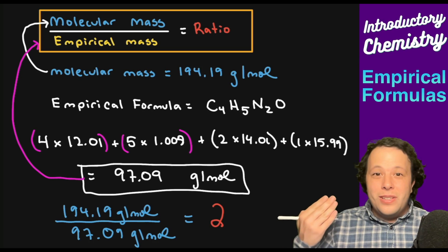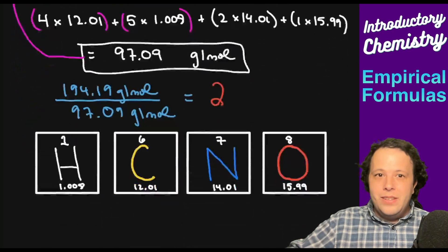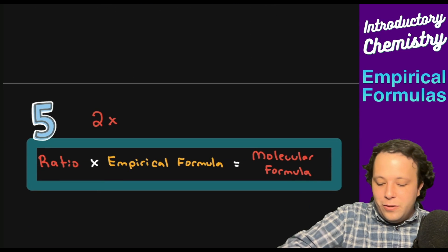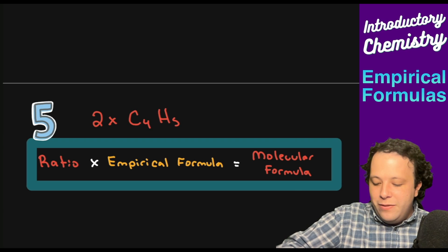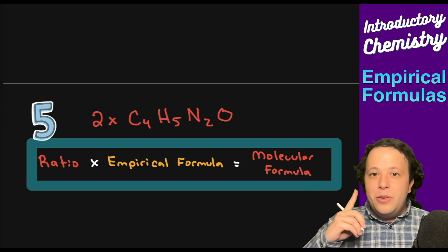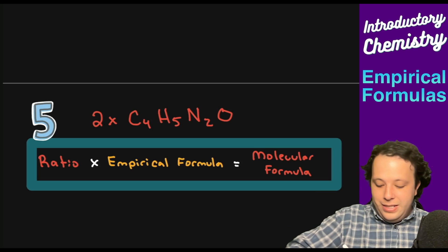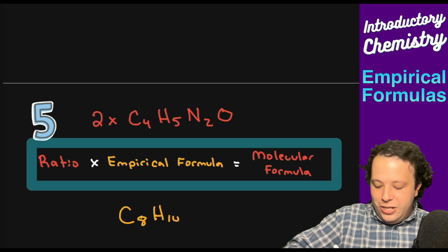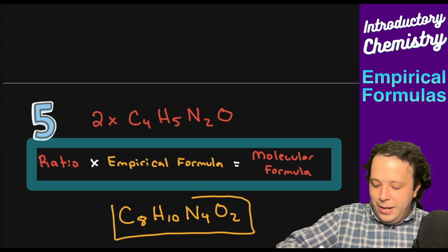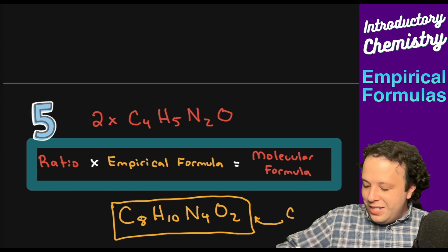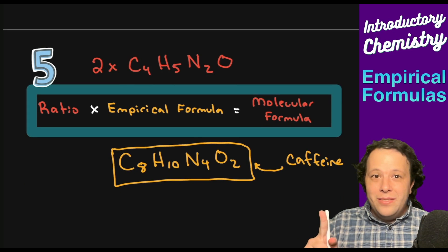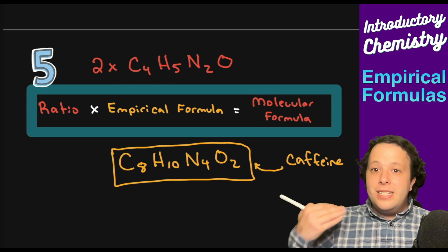We get a ratio of two. The last step is to use the ratio: take that ratio and multiply it by the empirical formula C4H5N2O. By doing that, it gives you the actual molecular formula, which is C8H10N4O2 — what keeps us going every single day. This is the molecular formula of caffeine, the true identity of it, versus the empirical formula which is the most simplified version.